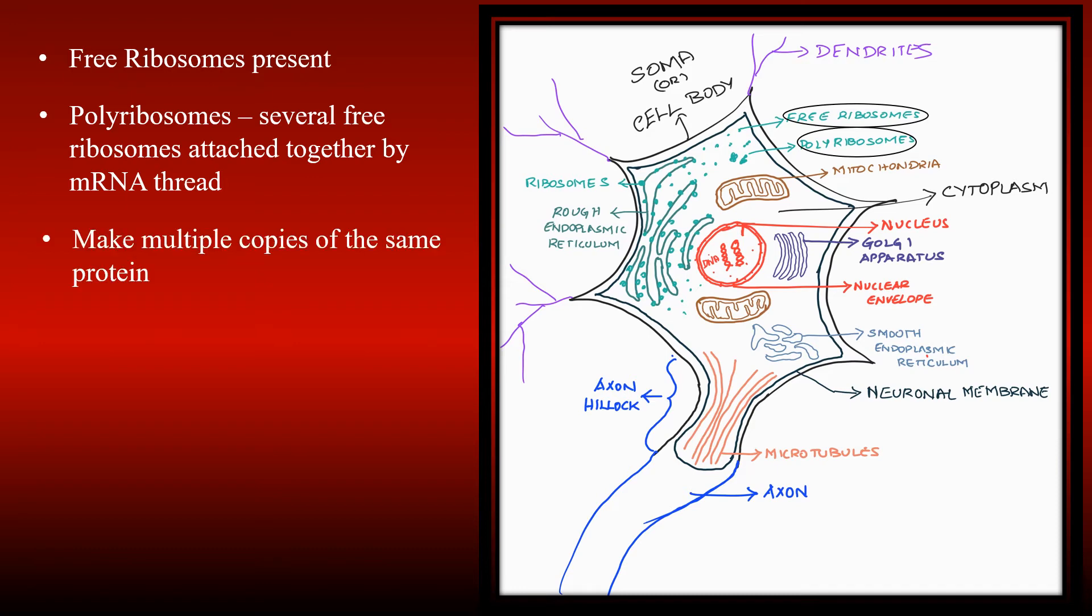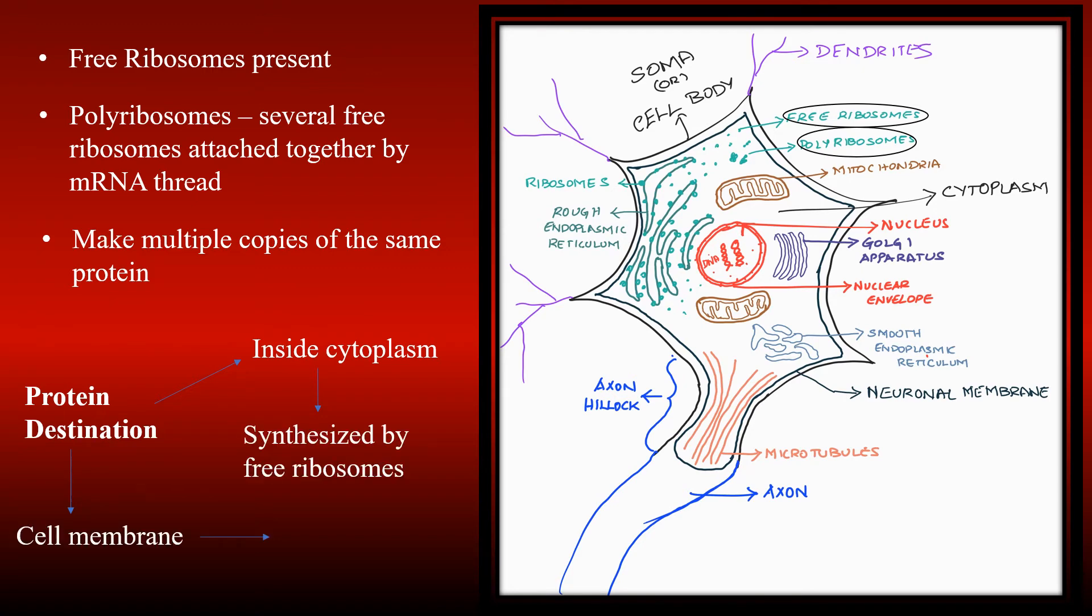So ribosomes are either free or attached to the rough endoplasmic reticulum, but they do the same job, which is protein synthesis. So what is the difference between the two? It has been found that the difference is the destination of synthesized proteins. If the proteins are made for the neuron membranes and have the need to gravitate towards it, then they get synthesized by the ribosomes in the rough ER. All the other proteins needed inside the cytoplasm get synthesized by the free ribosomes.